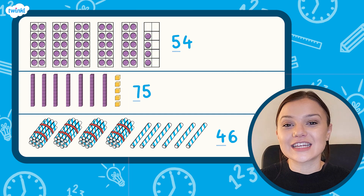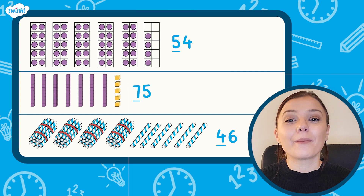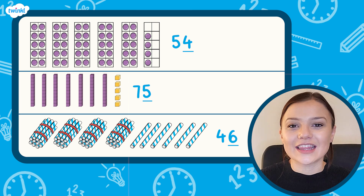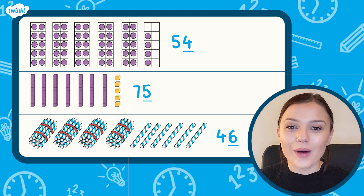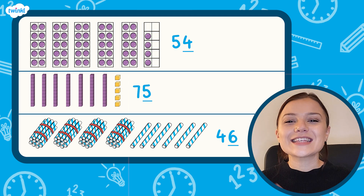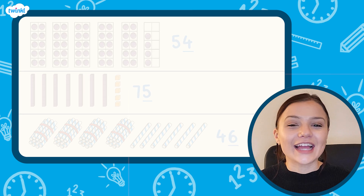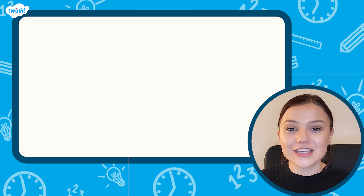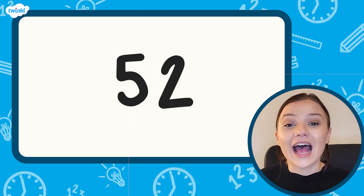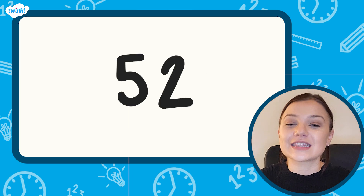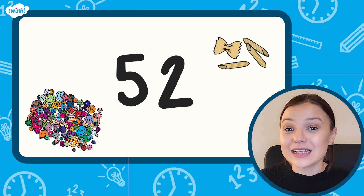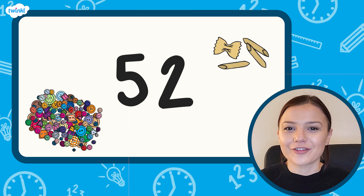Notice how the first digit in the number matches the number of tens and the second digit in the number matches the number of ones. Here's one final challenge: can you represent the number 52 using 10 frames and objects such as buttons or pasta pieces? How many tens does it have and how many ones does it have?